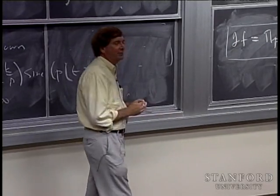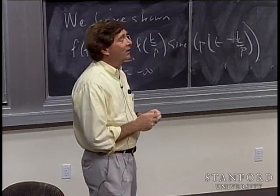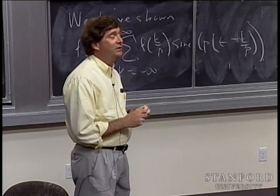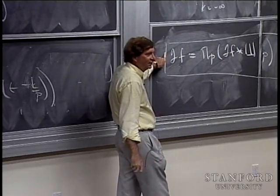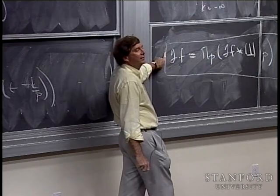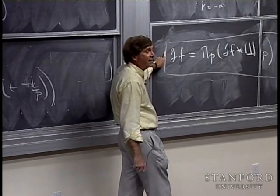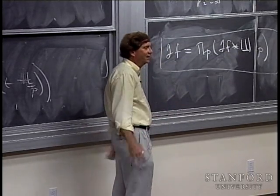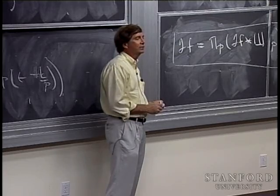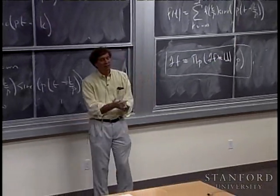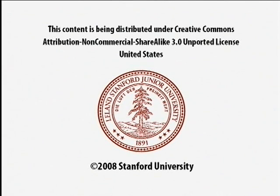I want to talk more about the consequences of this remarkable formula next time, including when things go wrong. When things go wrong, they can all be explained by when this formula is not correct. We'll talk about the phenomena of aliasing — the natural phenomena associated with sampling. But it's all based on this formula. You should think of the sampling formula as identical with its proof — if you do that, you'll never go wrong. That's it for today.